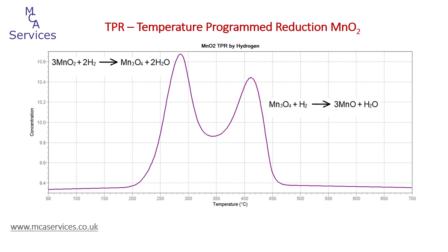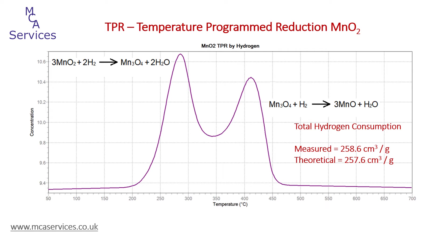Can we be sure that MnO2 is being reduced via an intermediate to MnO? We can look at the hydrogen consumption. Considering the complete process of MnO2 to MnO via the two-stage route, we get a theoretical hydrogen consumption of 257.6 cc per gram. The measured hydrogen consumption from this analysis is 258.6 cc per gram — in really good agreement, supporting the notion that the final product is MnO.